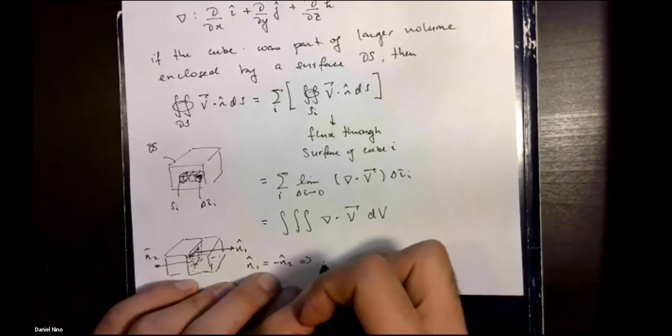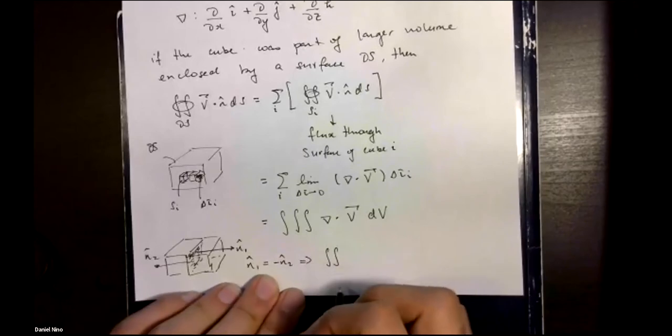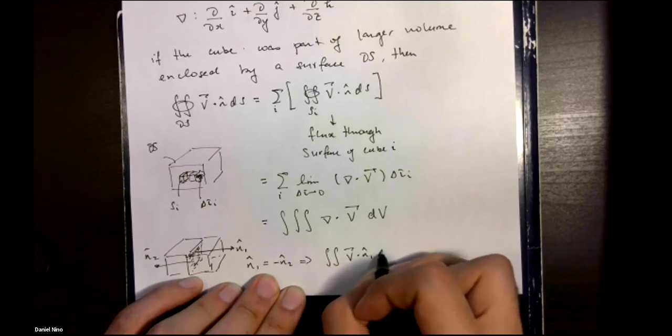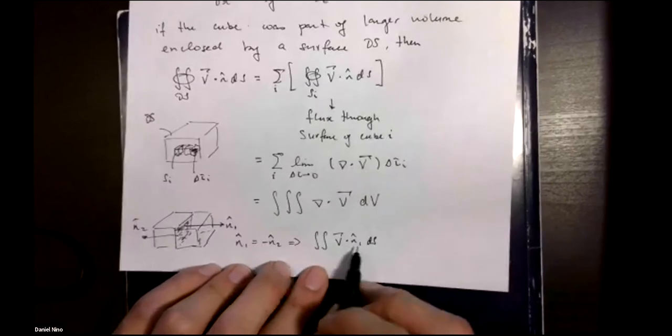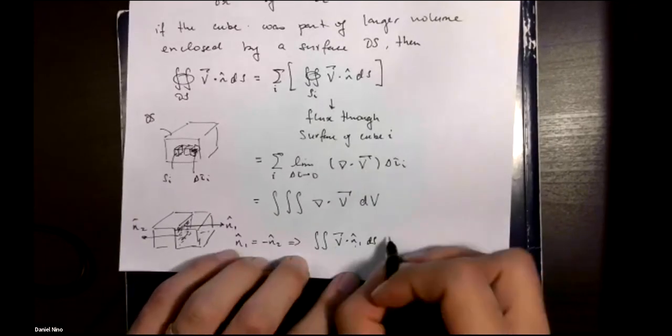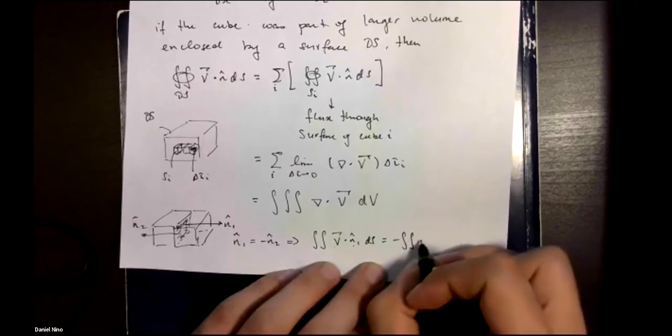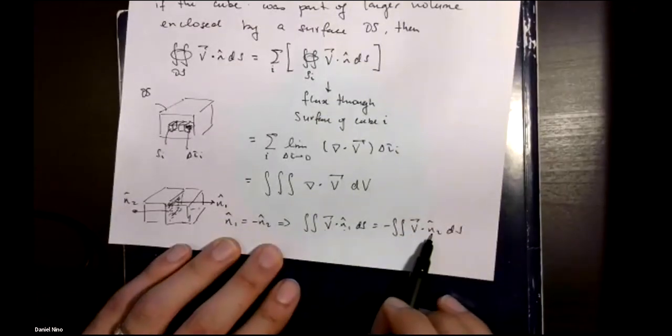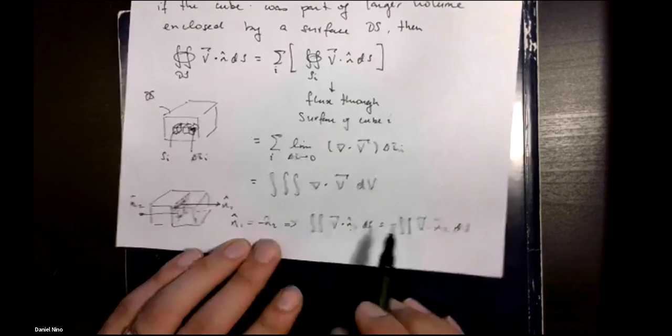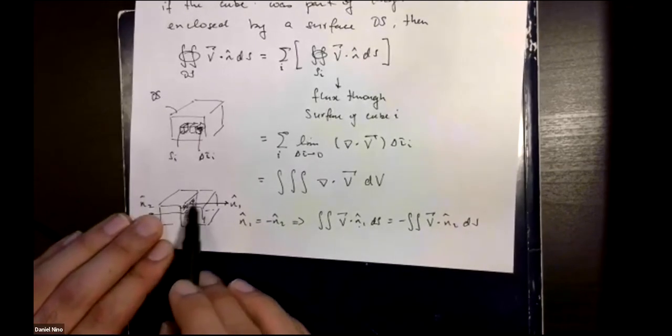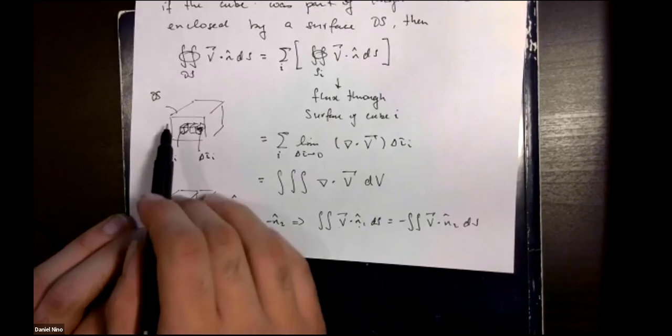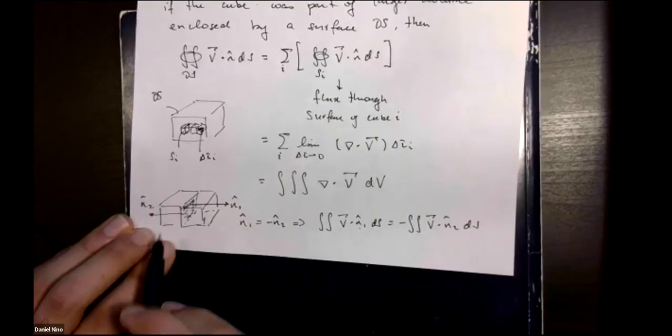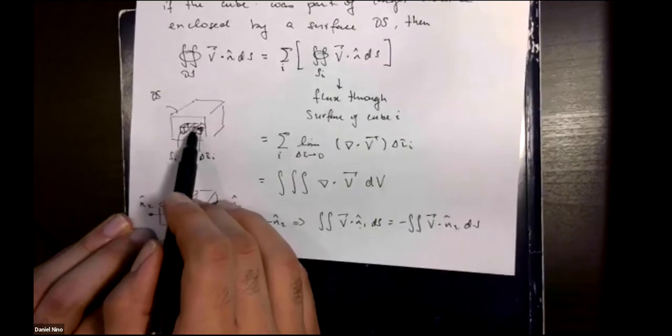When you calculate the surface integral where the outward normal is n1, this is equal to minus the surface integral with respect to the outward normal n2. That means that all of the contributions from common faces completely cancel out. You're only left with the contributions of flux going through the main faces of your larger volume. All of the other stuff inside with common faces cancels out.